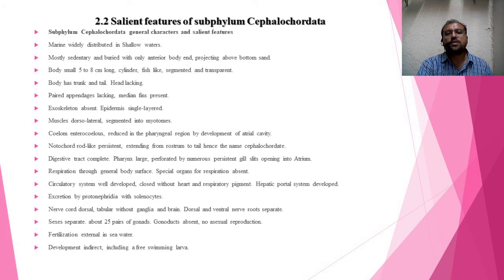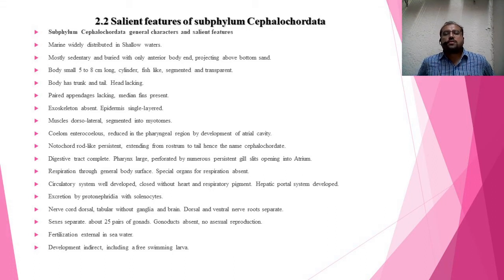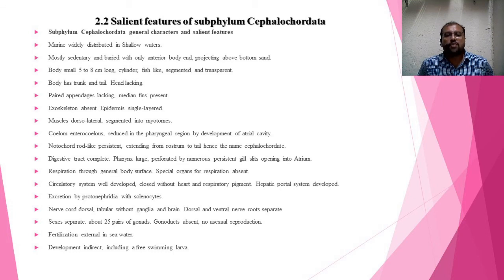Development is indirect, including a free-swimming larva. Just like Hemichordata which has a tornaria larva, and Urochordata which has a tadpole larva, Cephalochordata also has a free-swimming larval form.